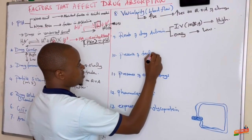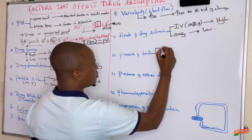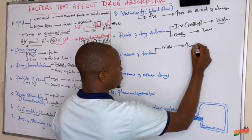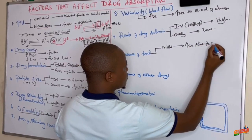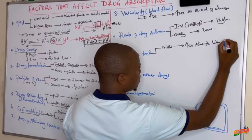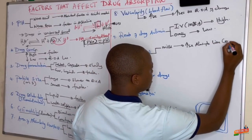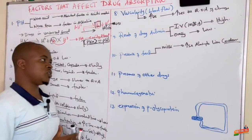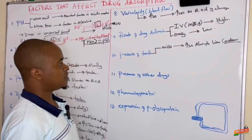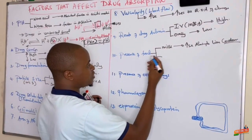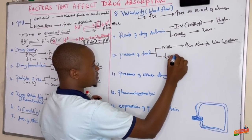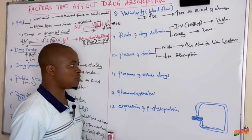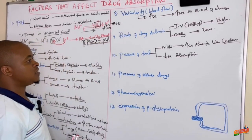The presence of food is another factor. Foods like milk increase absorption of lipid-soluble drugs — for example, artemisinin, also called coartem, which is used in malaria infection, is best taken with milk to enhance its absorption. Some food substances decrease absorption, which is why some pharmacists tell you to take certain drugs on an empty stomach and others after eating food.